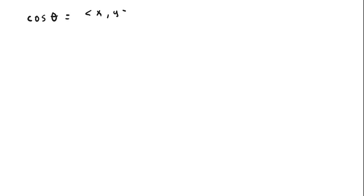In this video I want to go over how to use the more general or custom-defined inner product to calculate the angle between two vectors. If you're not familiar with the generalized inner product, please review the previous videos. As a reminder, the cosine of the angle between two vectors equals the inner product divided by the length of X times the length of Y.